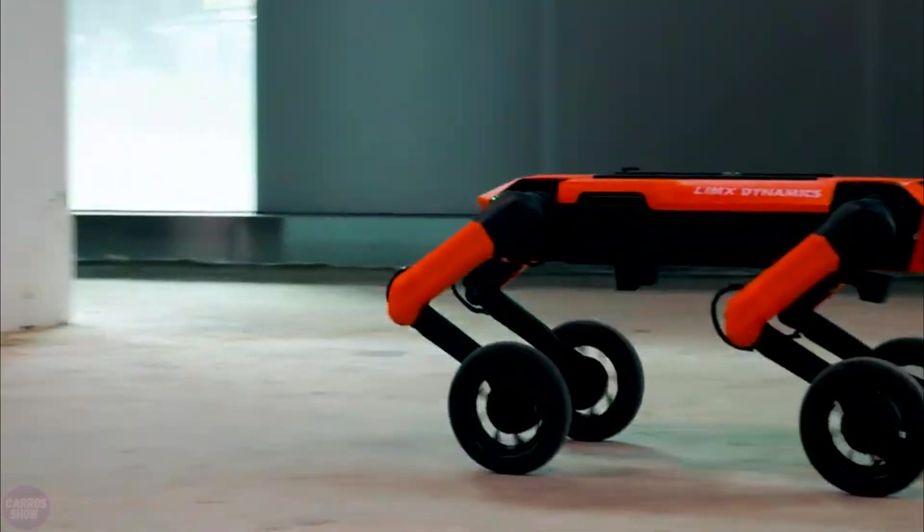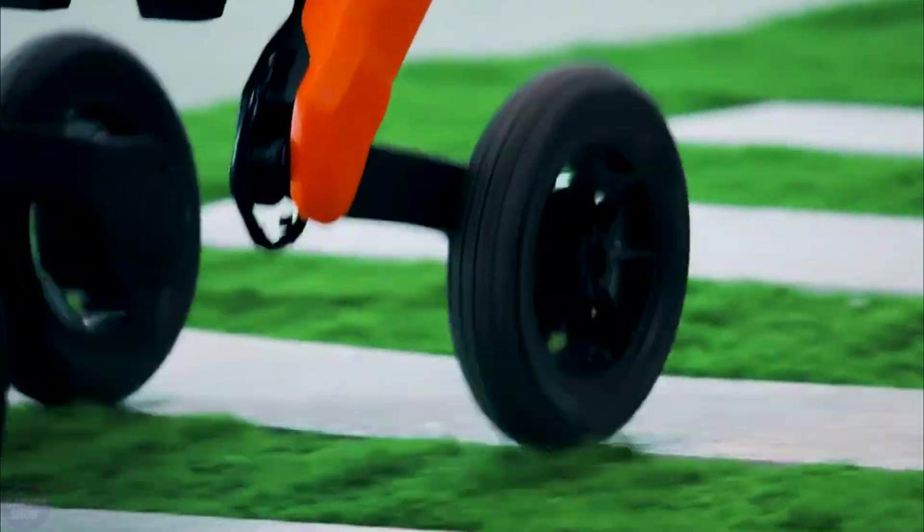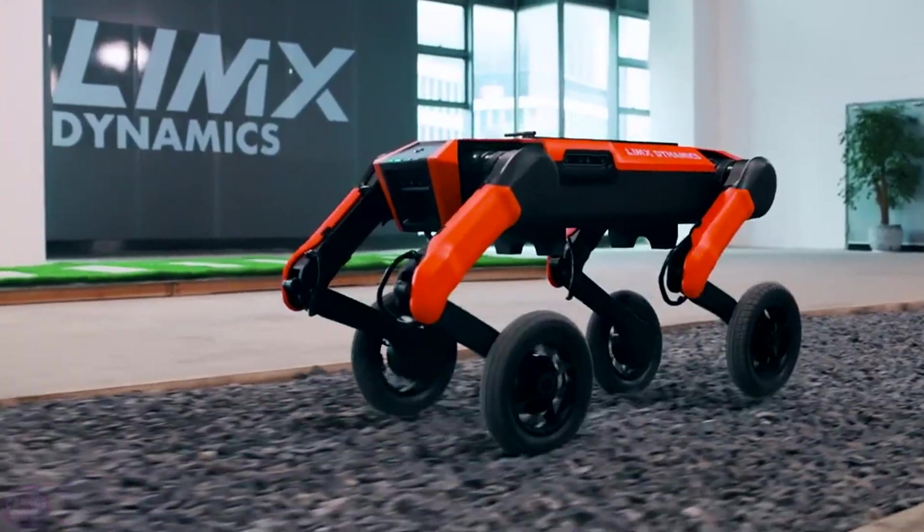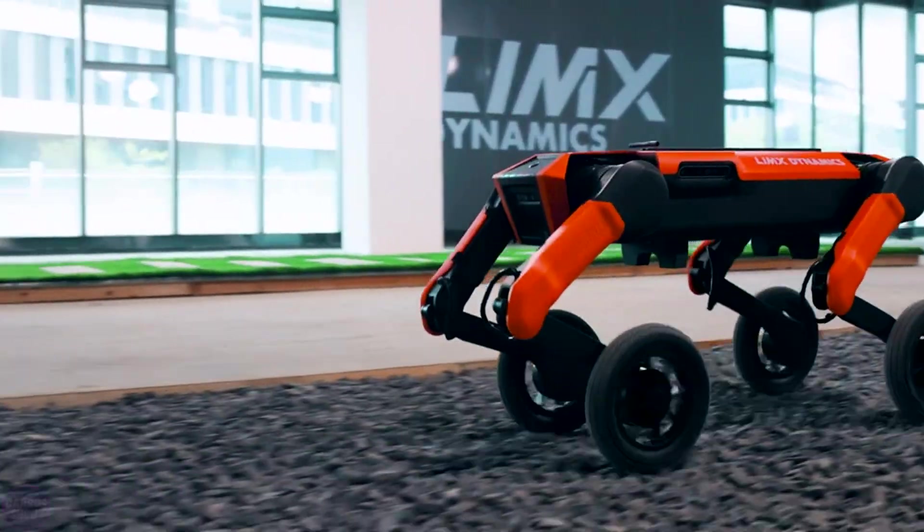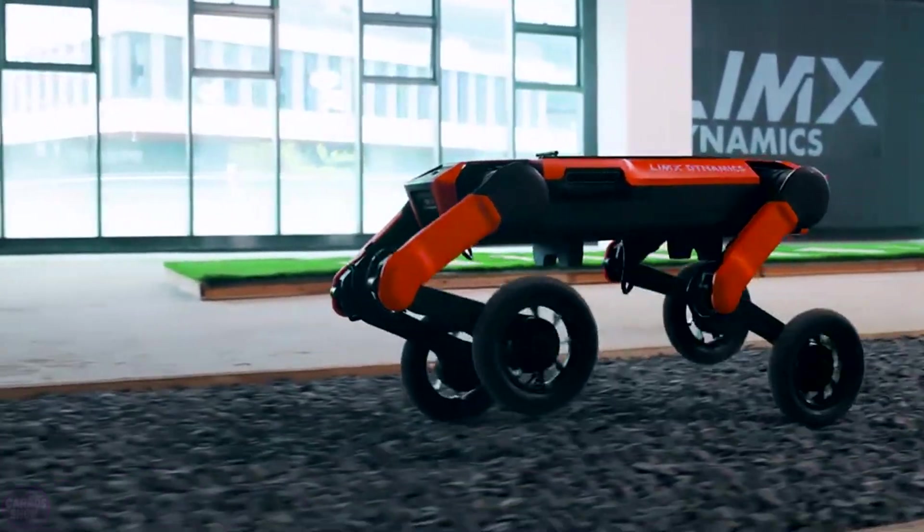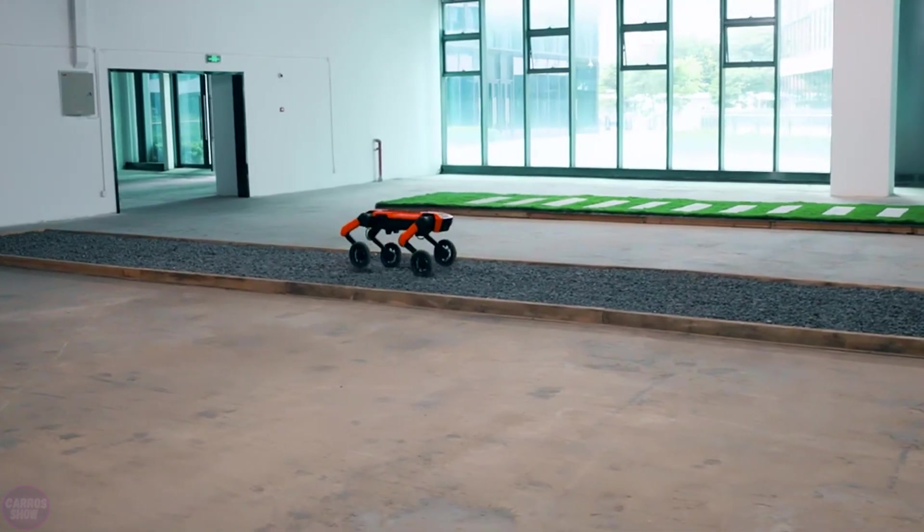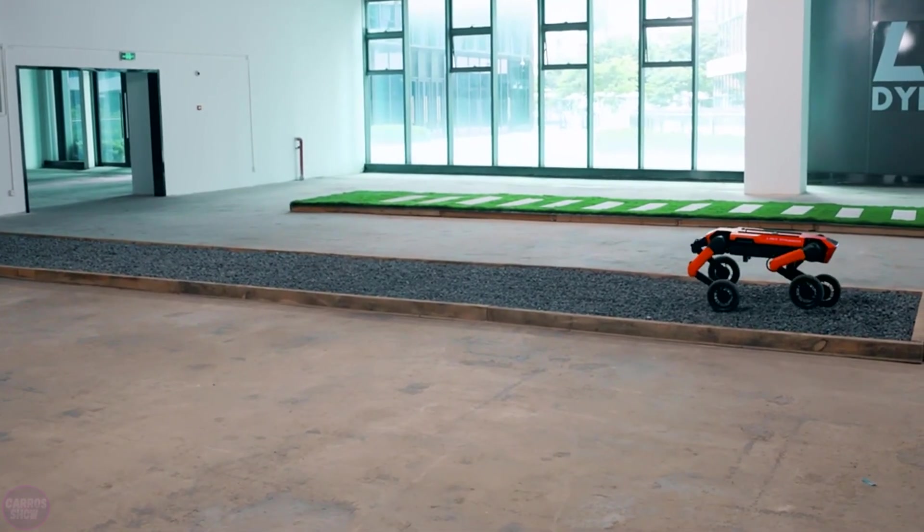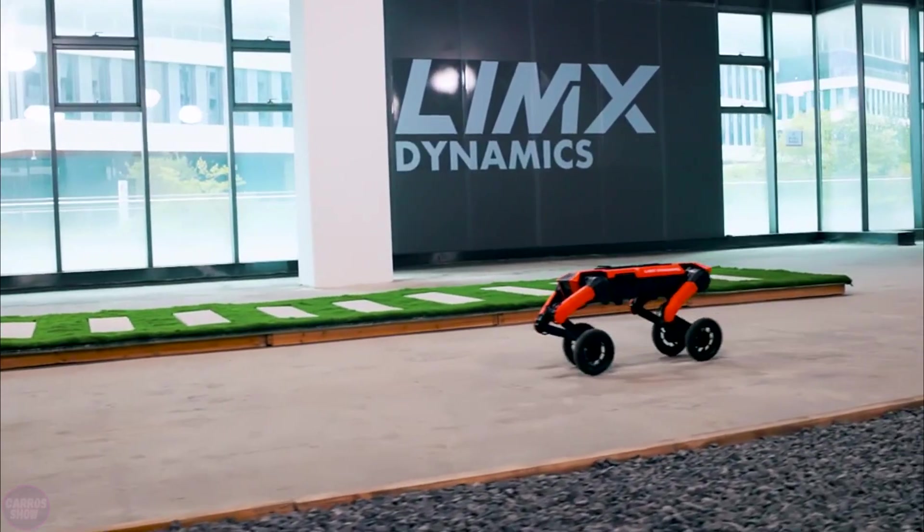All four legs of the LIM-X W1 have backward bent knee joints. At the end of each leg is a wheel with an electric motor that can be locked and act as a grippy sole during walking. The robot can combine walking with wheeling, and the integrated surface type recognition system allows it to autonomously switch between modes of movement, selecting the most suitable option depending on the situation.